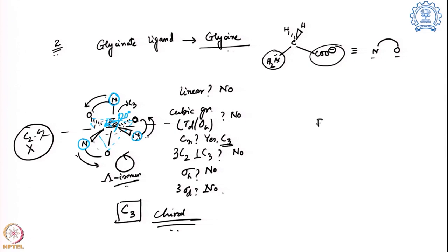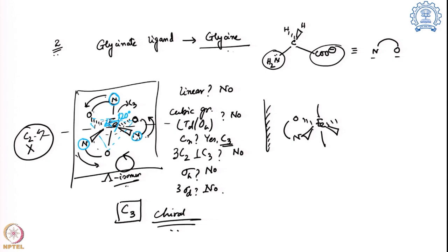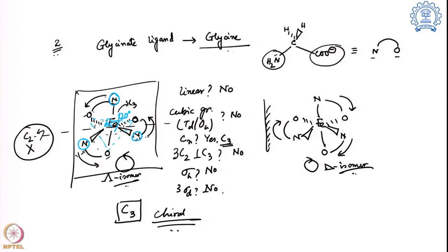Taking the mirror image of the glycinate lambda isomer, nitrogen comes to the other side, the connections rearrange, and checking the front-to-back rotation for nitrogen to oxygen across all three ligands shows the rotation direction is now reversed — giving the delta isomer. This is what happens with the glycinate ligand.